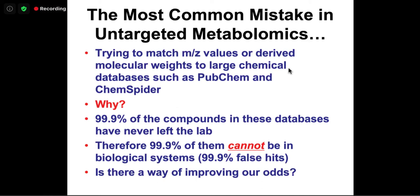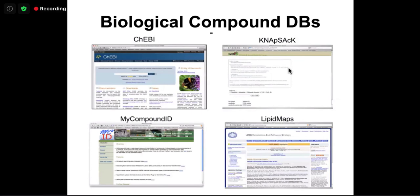Trying to match molecular weights or m/z values to these large databases is a mistake. Estimates suggest less than 0.01% of compounds in PubChem have actually left the lab, meaning they are not in the environment, in trees, plants, your body, parasites, microbes, or waterfowl. If 99.9% of compounds cannot by definition be in the environment, this is not the right approach for finding compound matches in biological samples.